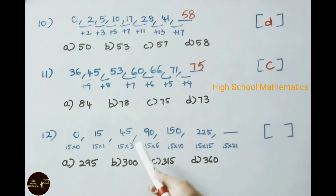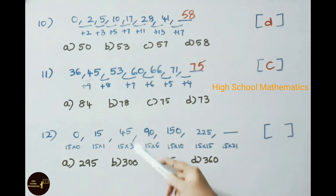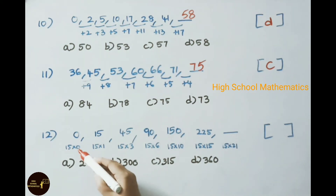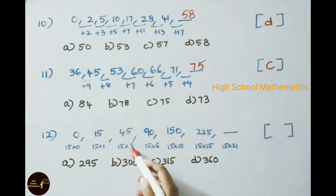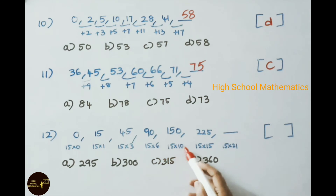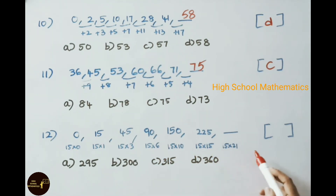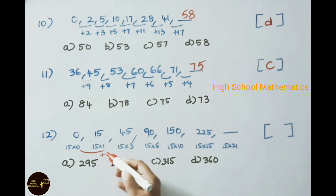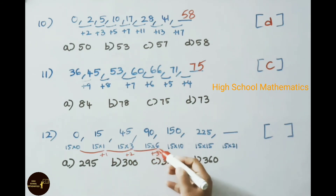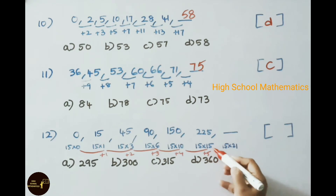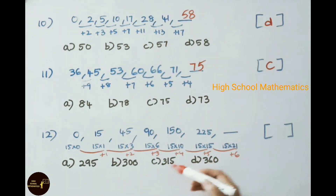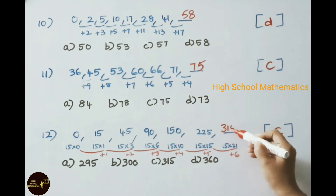Twelfth practice problem: 0, 15, 45, 90, 150, 225 — find the next term. All terms are multiples of 15: 15 times 0, 15 times 1, 15 times 3, 15 times 6, 15 times 10, 15 times 15. The multipliers follow differences of plus 1, plus 2, plus 3, plus 4, plus 5, so the next is plus 6, giving multiplier 21. Therefore 15 times 21 is 315. The answer is option C, 315.